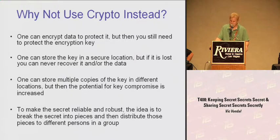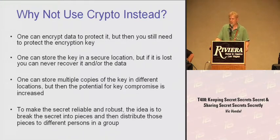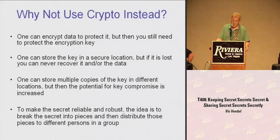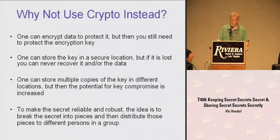You can store the key in a secure location — on a disk or in your mind — but if you die or the person who knows it dies, you can't recover it. Or if the disk gets wiped, you can't recover it. You can store copies in multiple locations, but then the potential for complete key compromise increases. So to make the secret key reliable and robust, you break the secret into pieces, distribute those pieces to different persons or machines, and have only some — not all — pieces needed to come together to recover the protected information.